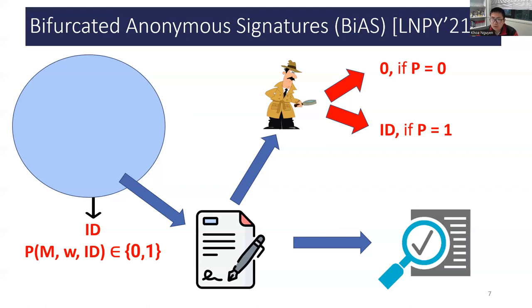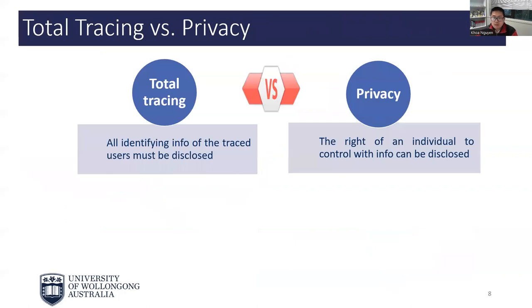However, there are still problems. There is in fact a crucial disadvantage of BAS, of group signatures, and all similar proposals. We observe that accountability in these systems is realized via a total tracing procedure, during which the whole identity of the traced user must be disclosed to the authorities. This level of accountability is indeed a serious violation of users' privacy. While privacy can be a very complicated notion, in its pure sense it can be defined as the right of an individual to control which piece of information about herself or himself can be disclosed.